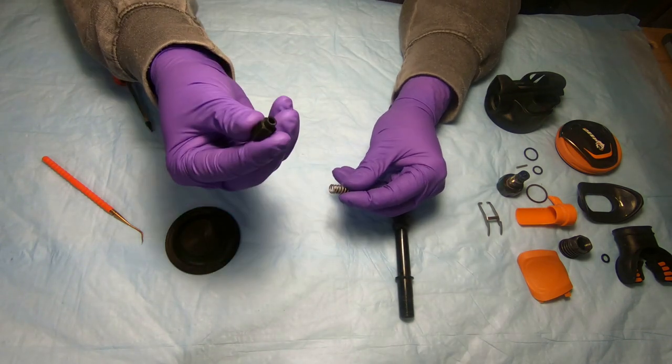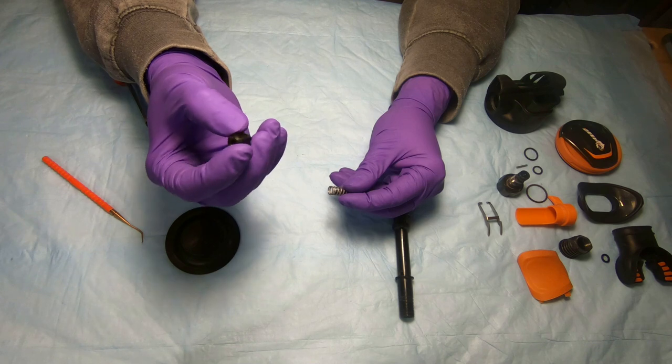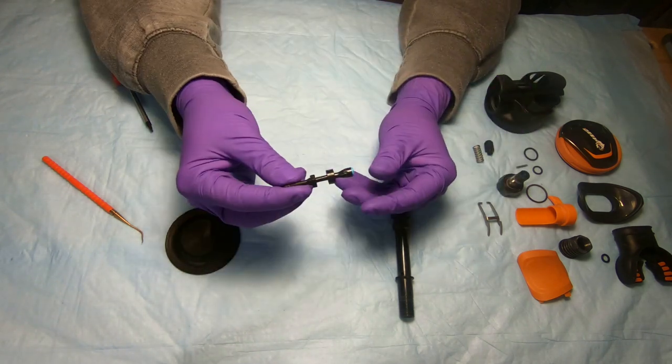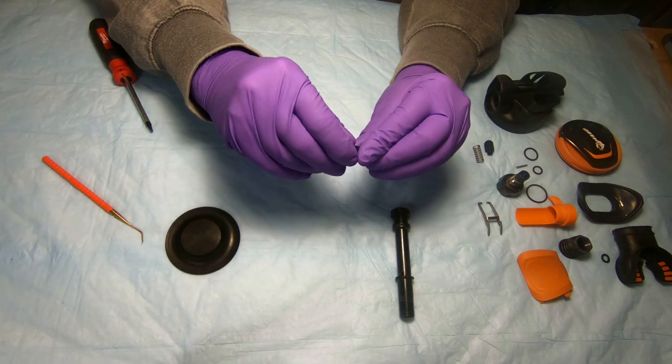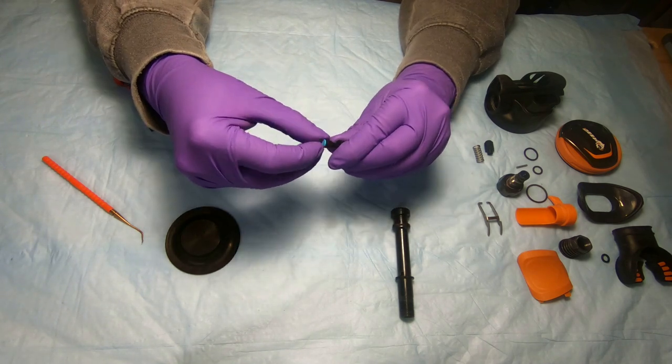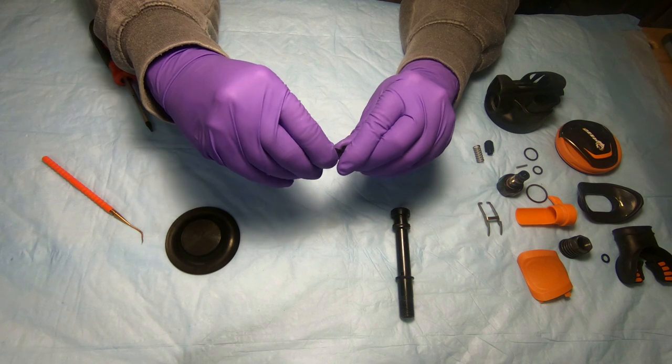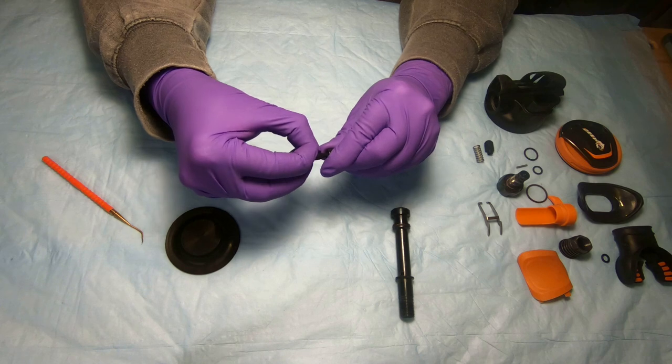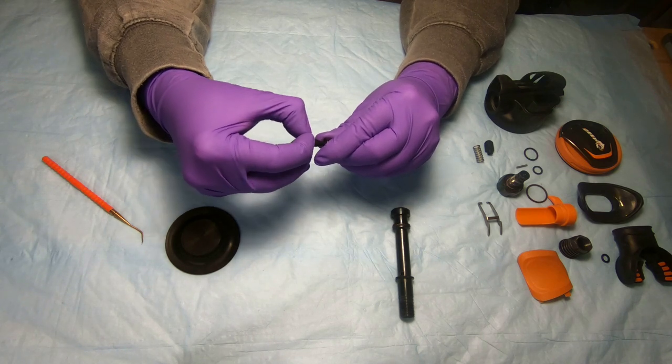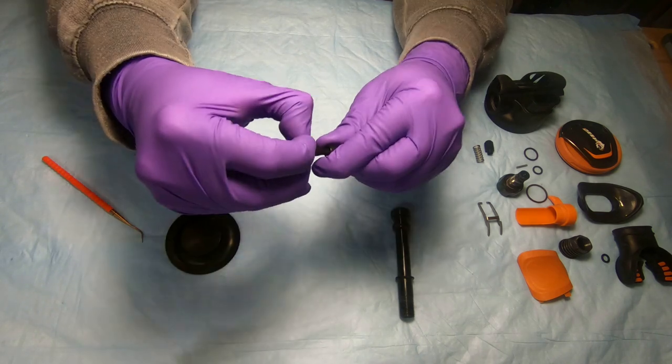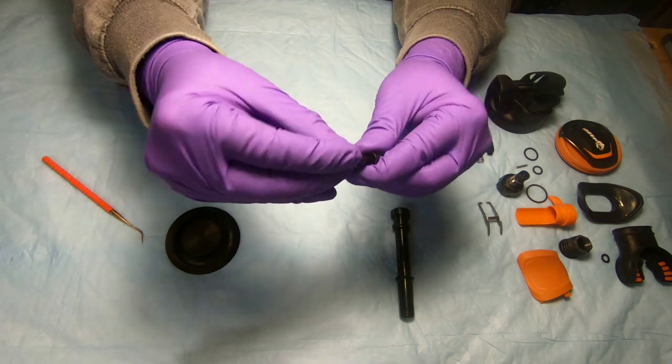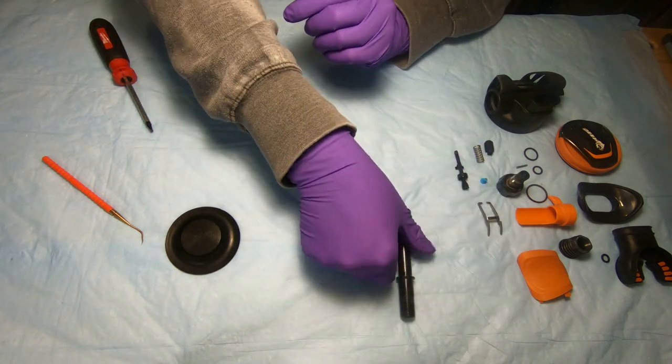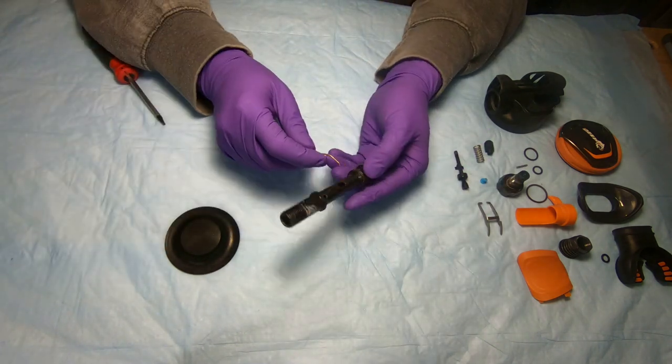We're gonna take off the balance cylinder, mainspring, piston, and we're gonna remove the low-pressure seat because we'll be probably replacing it - it's part of the service kit. Now we can take this o-ring off.